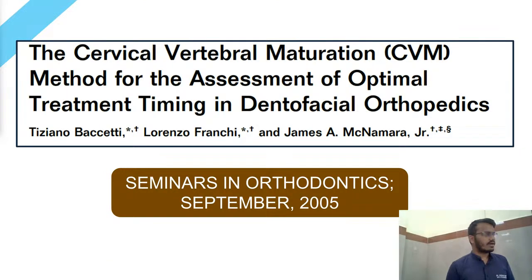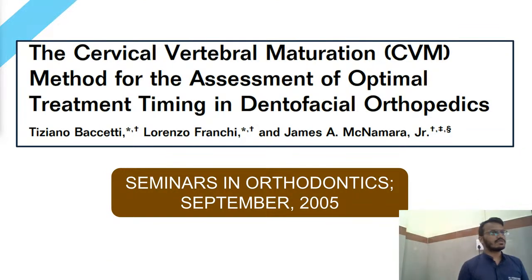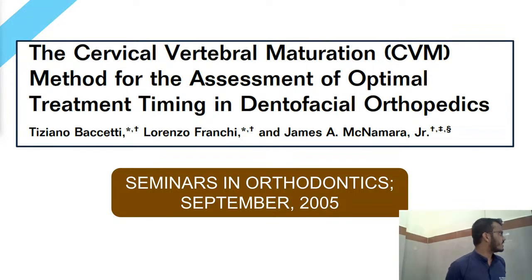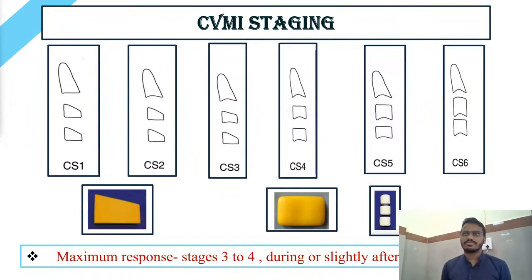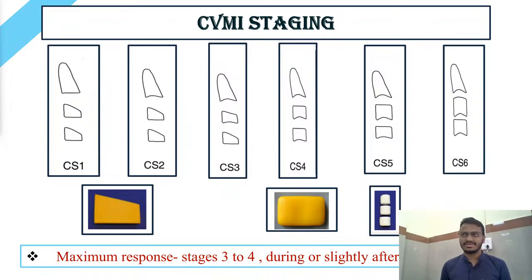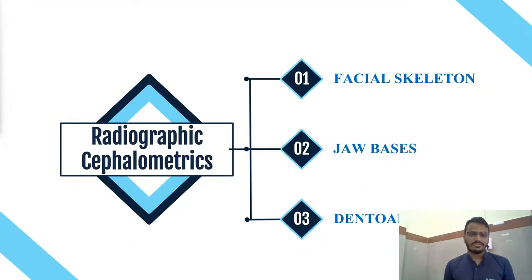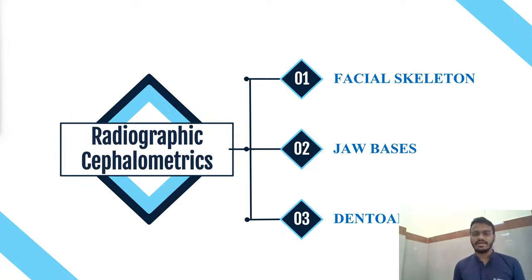Before moving ahead, we should understand which stage of growth the child is in. For that, I have referred to the article by Paschetti et al. on the cervical vertebrae maturation method for the assessment of optimal treatment timing in dentofacial orthopedics. These are the various CVMI staging that are given. Radiographic cephalometrics is divided into further headings: facial skeleton, jaw bases, and dental analysis.